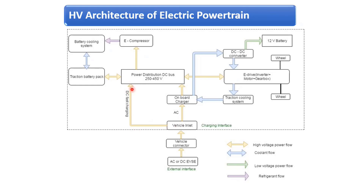In the second method, if DC is directly supplied to the vehicle inlet, it connects directly to the high voltage power distribution box and then to the battery pack — this is called DC fast charging. The battery pack is cooled using a battery cooling system powered by the compressor. Additionally, there is an auxiliary battery; from the onboard charger, a DC-DC converter charges this 12V or 24V auxiliary battery.